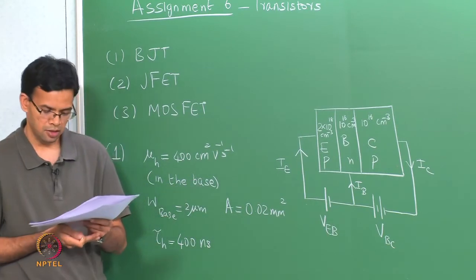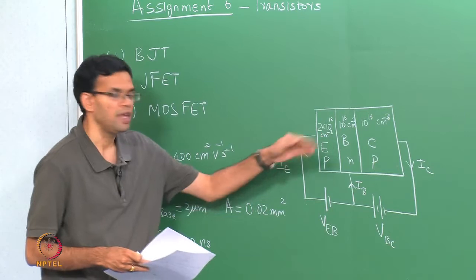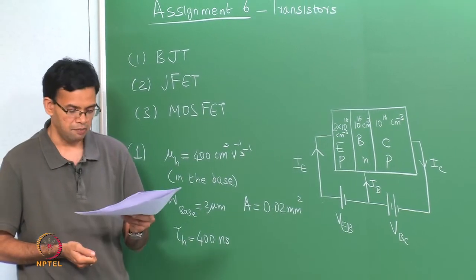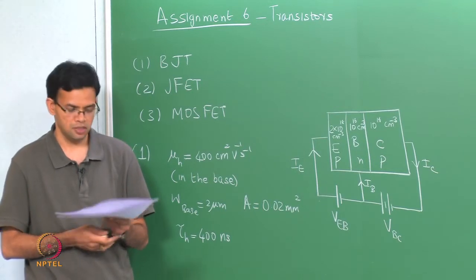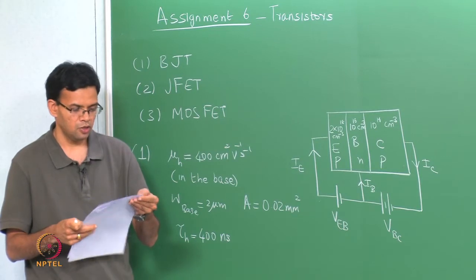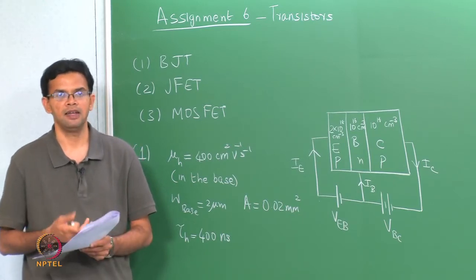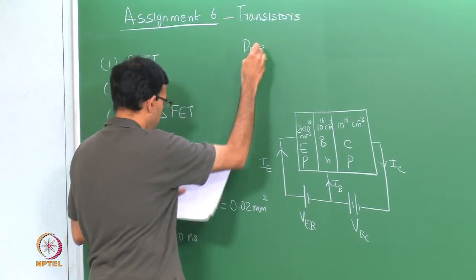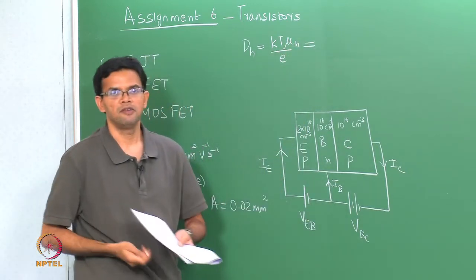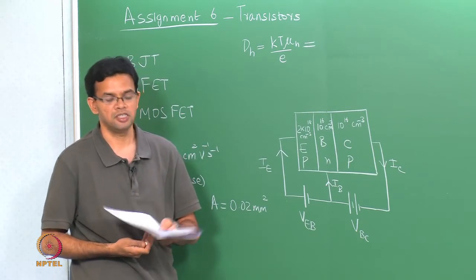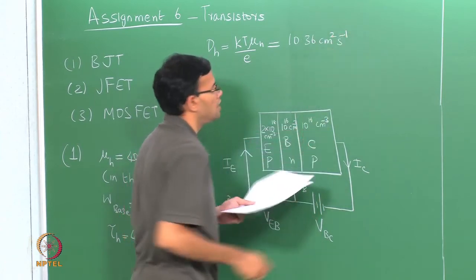We want to calculate the common base mode transfer ratio alpha — the amount of current that goes from the emitter to the collector — and also the current gain beta. We also want to know what the emitter-base voltage is if the emitter current is 1 milliampere. We look at the mobility of the holes in the base; from the mobility we can essentially calculate the diffusion coefficient: D_h = kT·μ_h/e, which comes out to be 10.36 cm²/s.